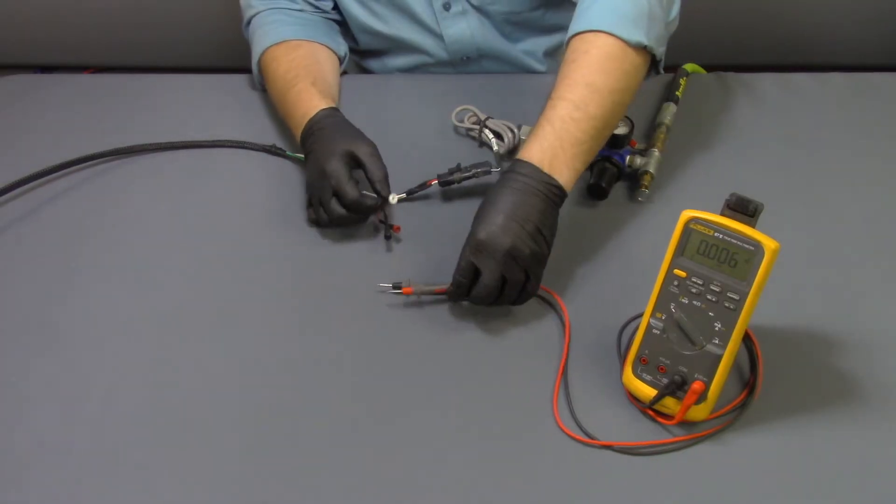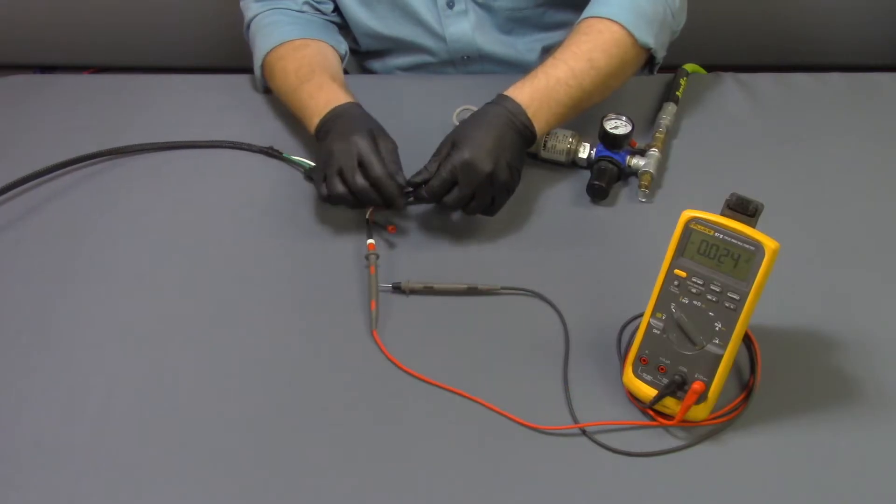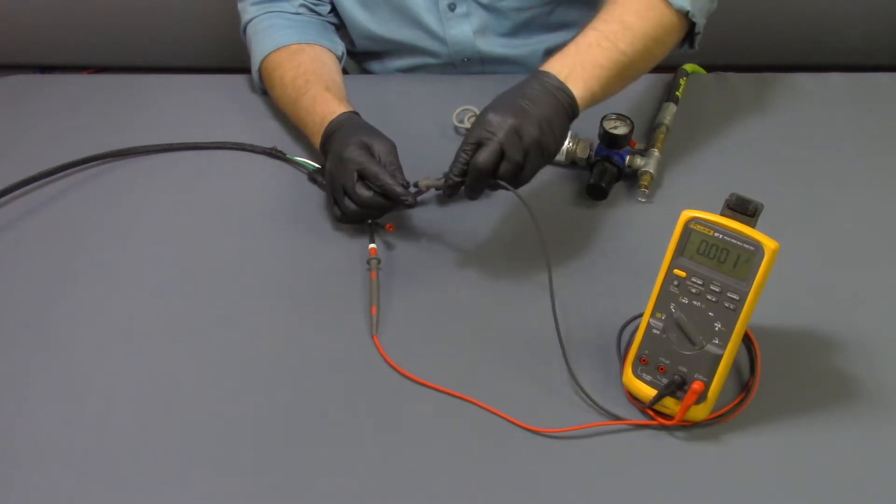Take your positive lead and put it in the white wire on the breakout harness and your negative lead to the black wire.